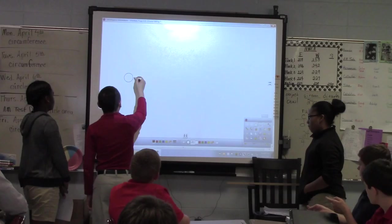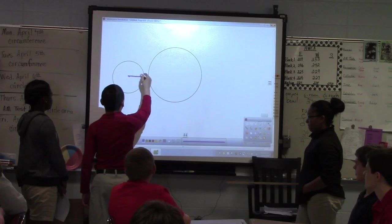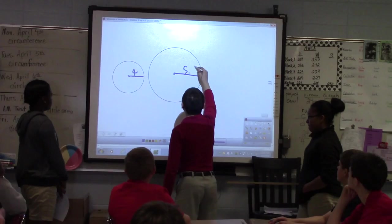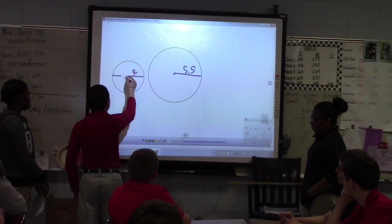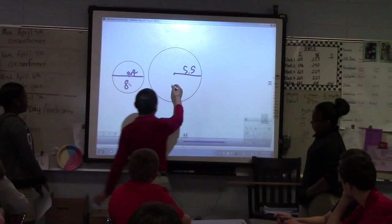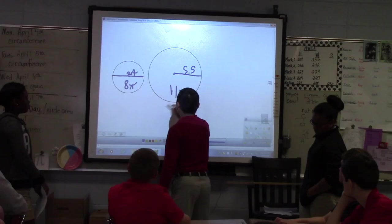So the question said that there was a small pizza and a medium pizza. The small pizza's radius was 4 inches and the larger one was 5 and a half. And it asks, what's the difference between the circumference? The diameter is 2 times the radius, and that's 8, that's 11. And the circumference of this is 8 pi, this is 11 pi, and we subtract that with 8.